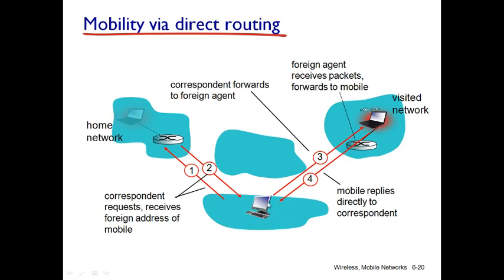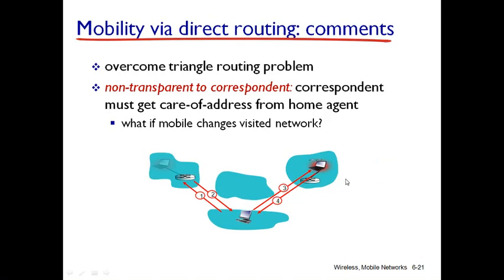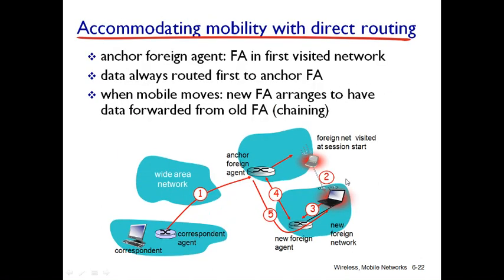In direct routing, the correspondent wants to get the care-of address from the home network or home agent. Once the correspondent gets the care-of address, they will directly call the visited user via the foreign network or foreign agent. This way, it solves the triangle problem. You can see here the home network, visited network, foreign agent, and other entities.